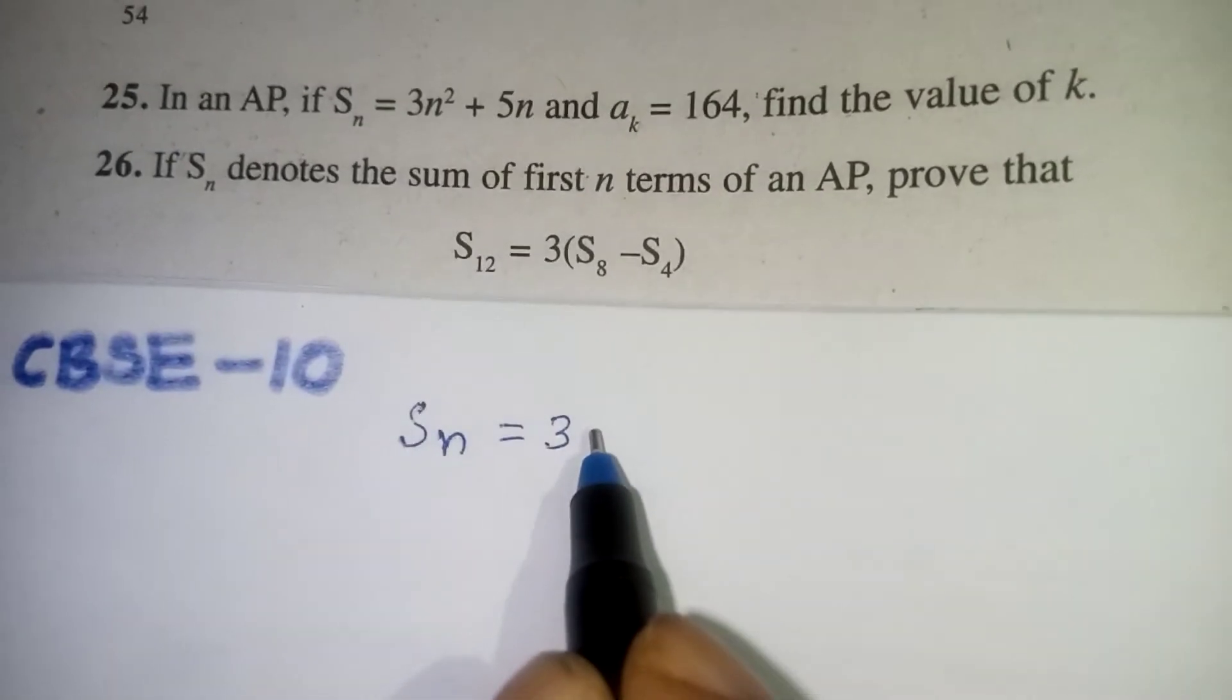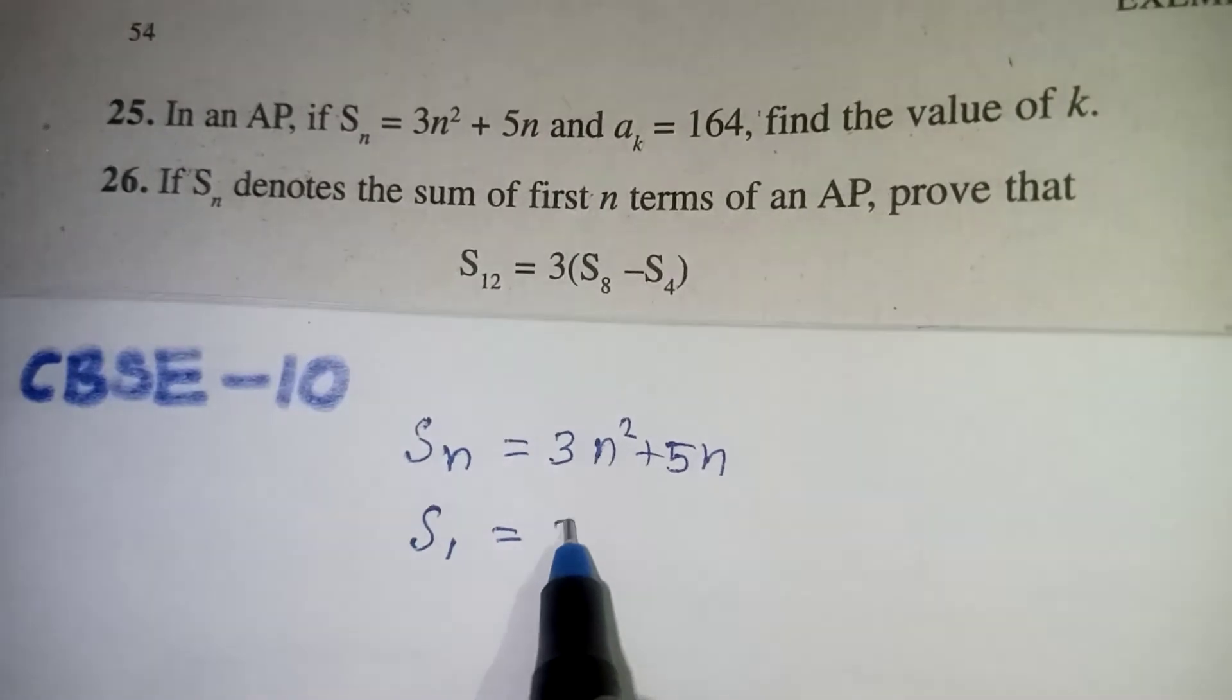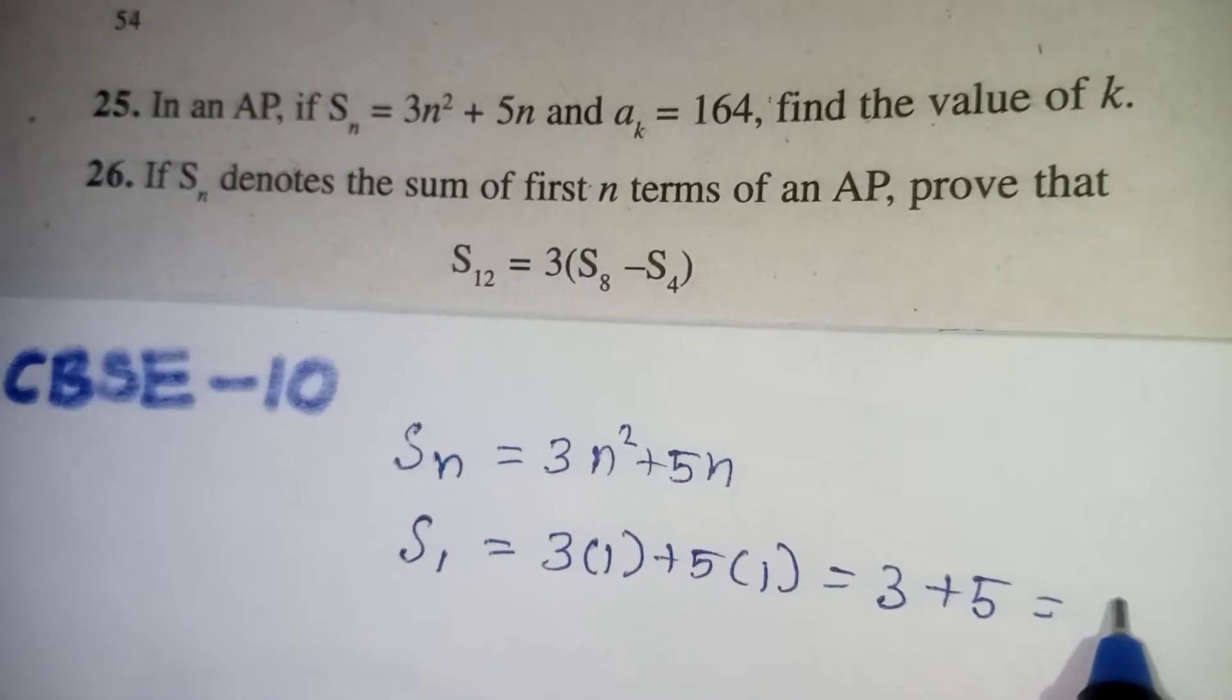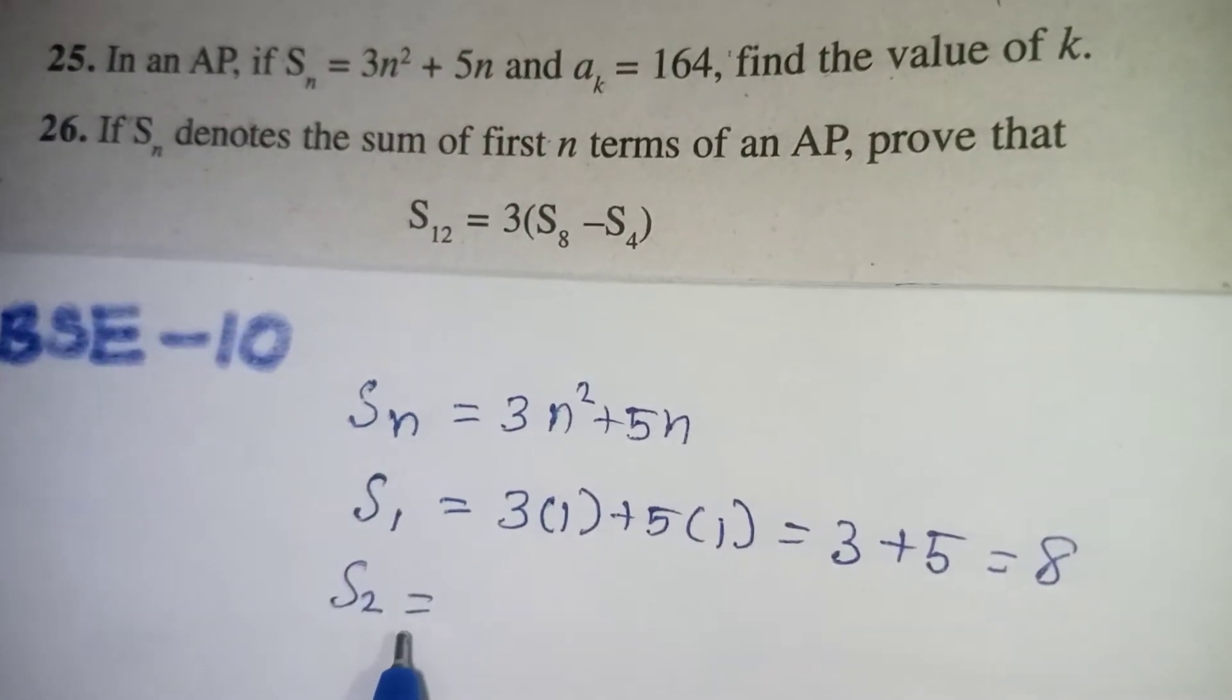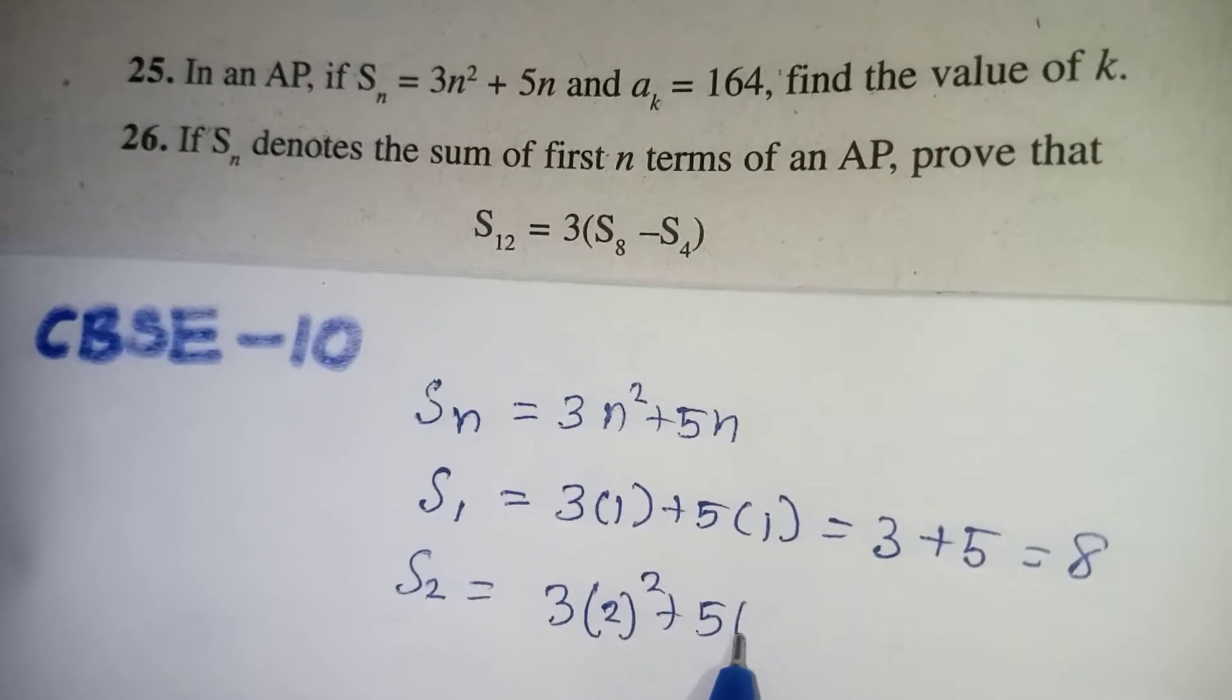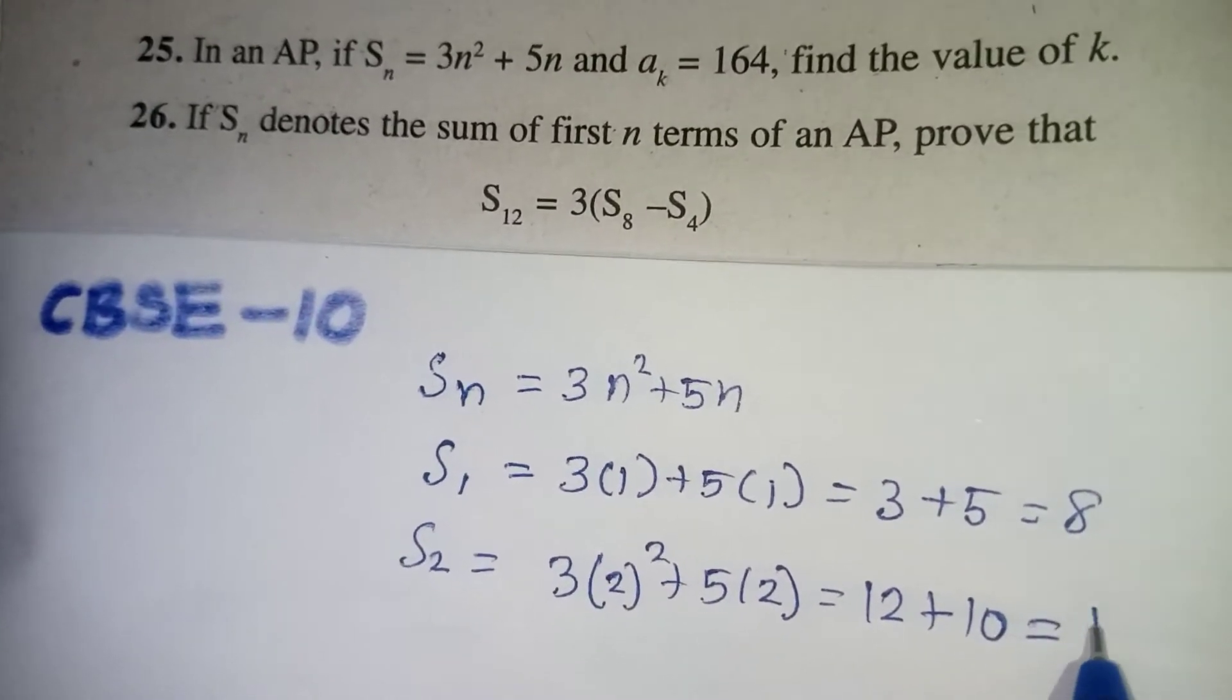So SN is equal to 3N squared plus 5N is given. Now if you substitute in the place of N is 1 it will become S1. S1 is equal to 3 into 1 squared plus 5 into 1, so 3 plus 5 will give you 8. Now let us find S2. While substituting in the place of N is 2, it will give you S2. So 3 into 2 squared plus 5 into 2. So 2 squared is 4, 4 threes are 12 plus 5 twos are 10, which is equal to 22.